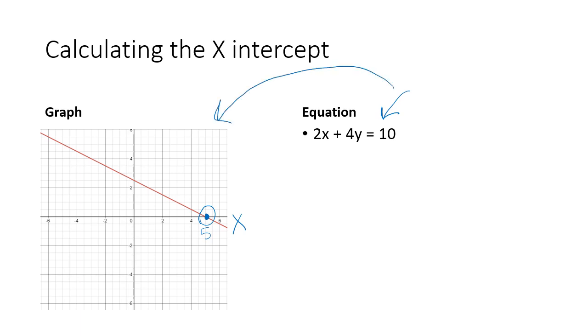And this equation over here corresponds to this graph. And remember, I said the x-intercept is when y is zero. So how you would get that from an equation is plug in zero for y. So I would get 2x plus 4 times zero equals 10.